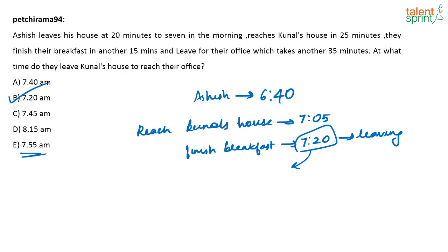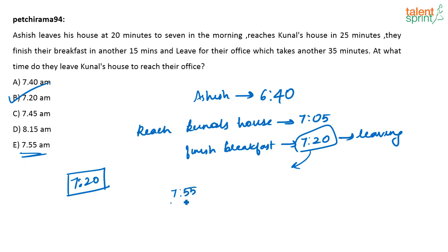At what time do they reach the office? If that was the question, then it would be 7:20 plus 35 minutes which will be 7:55. But here they are asking at what time do they leave Kunal's house. It is a very easy question — don't make a mistake. They are not asking when they are reaching the office. If the question was when they are reaching the office, then the answer is 7:55. But they are asking at what time do they leave Kunal's house to reach the office, so they are leaving at 7:20.